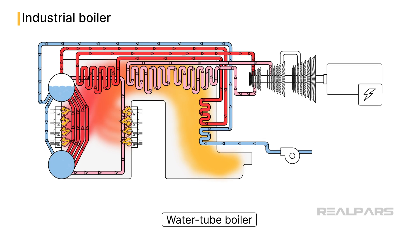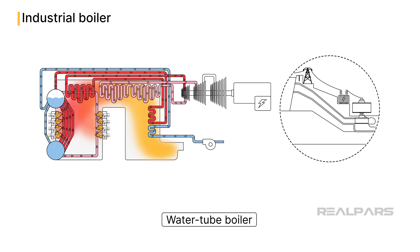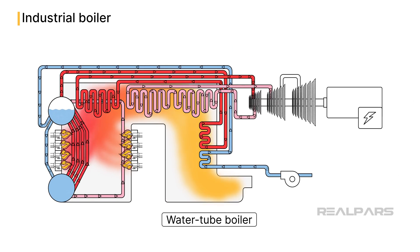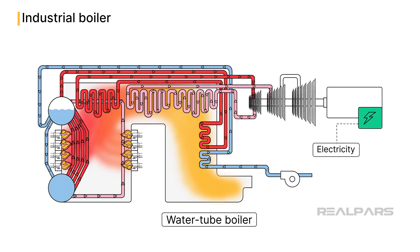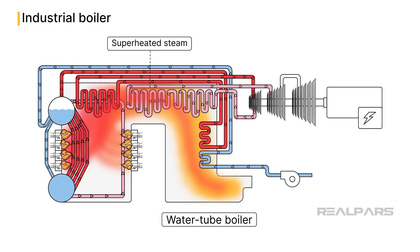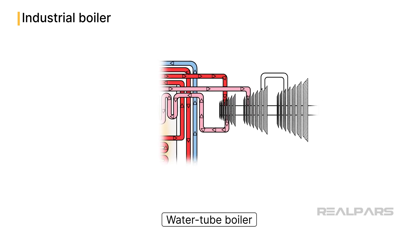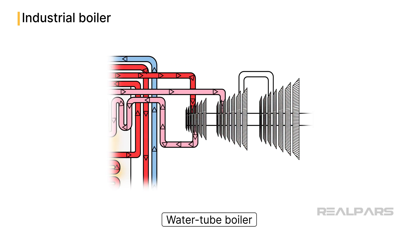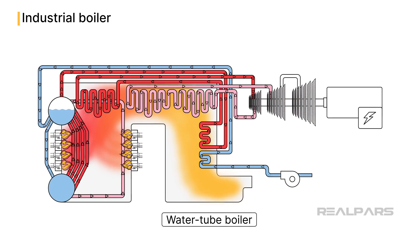Water tube boilers, which are commonly used in power plants, heat water to create superheated steam, which is then used to drive turbines connected to generators, producing electricity. The steam is also reheated again after the first stage of the turbine. Why do we need superheated steam? Because we shouldn't allow the steam to condense back into water, to prevent damage to the turbine blades. In the next part, I'll explain how the boiler's superheater makes this happen.